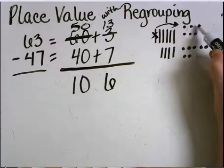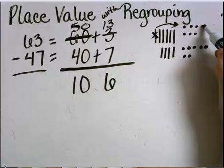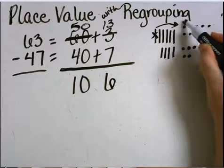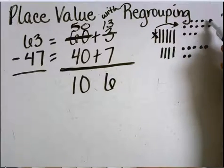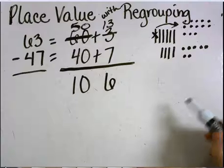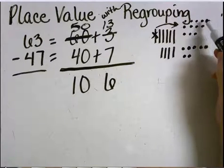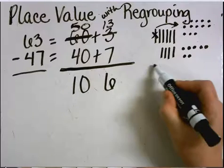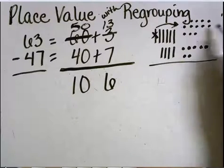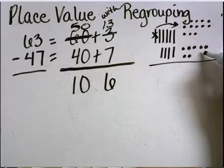Counting 1, 2, 3, 4, 5, 6, 7, 8, 9, 10. I now have 13 ones here. Subtract the 7 ones I can now do. 13 ones subtract 7 ones is 6 ones.